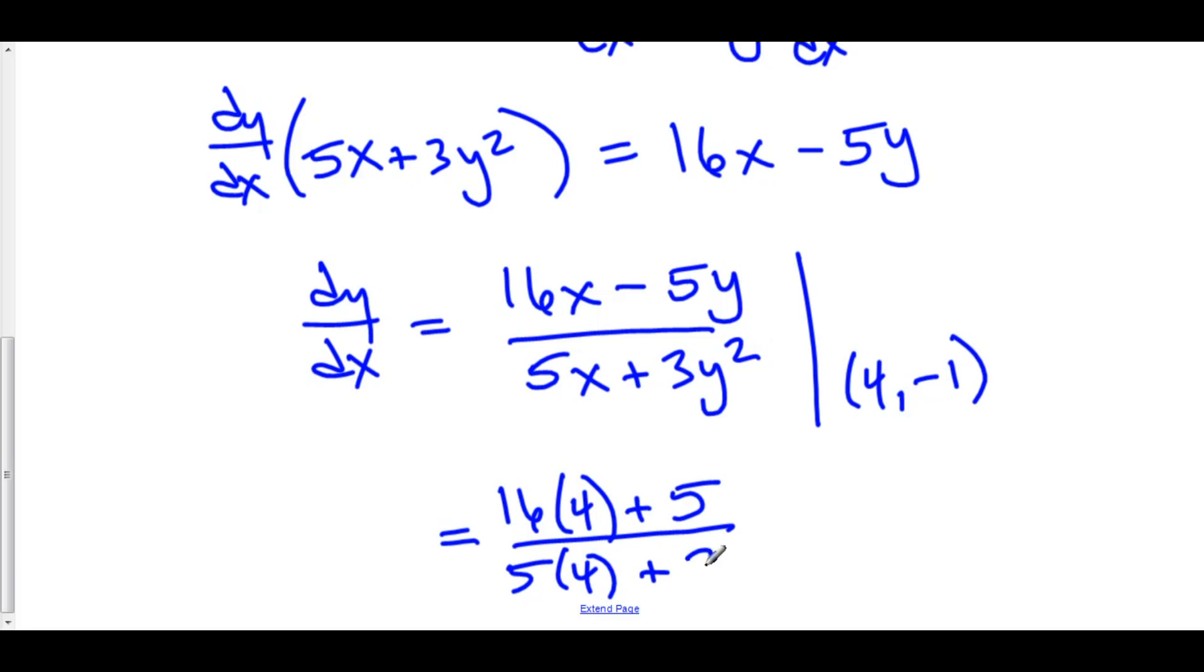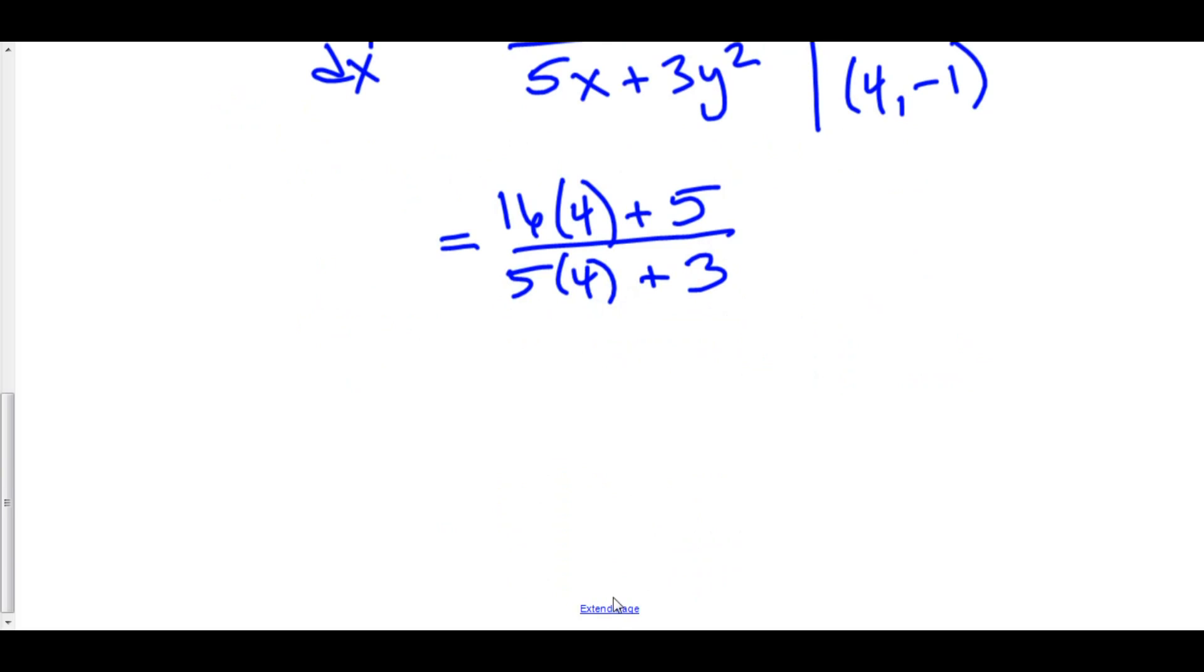16 times 4 is 64 plus 5 is 69 over 5 times 4 is 20 plus 3 is 23. And so the slope of this tangent line at the point 4 comma negative 1 is 3.